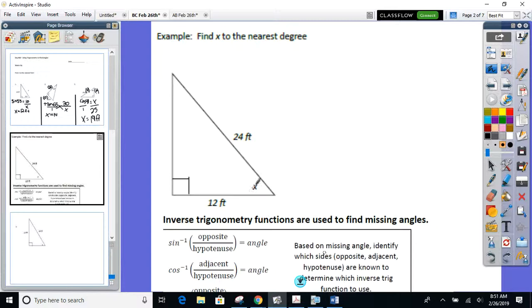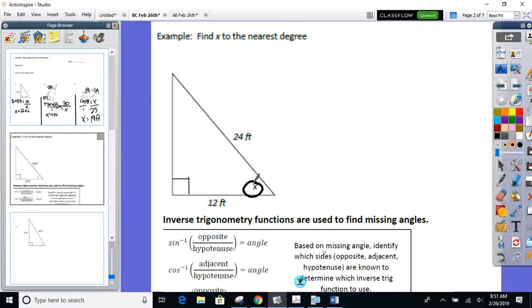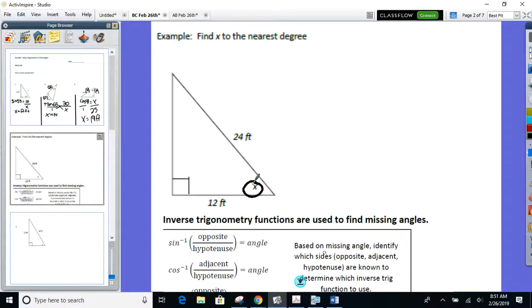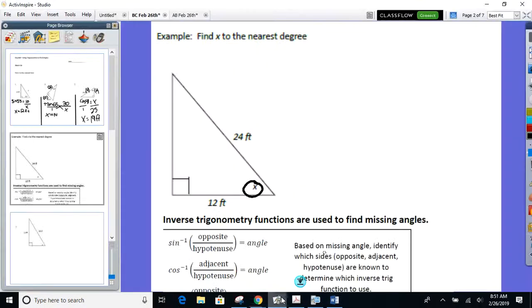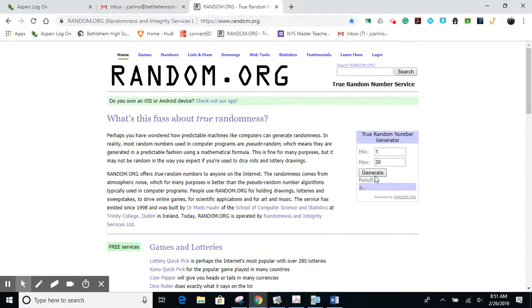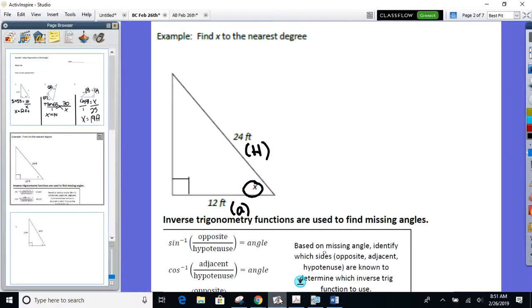So in this first example here, trying to find X, identify what the 12 and the 24 are. I'm not going to change that. Here you go, 28. What's the 12? That's adjacent to the angle I'm trying to find. What's the 24? The hypotenuse. So out of those, adjacent hypotenuse, which ratio should I use? Cosine. So everyone ready? Let's set it up.